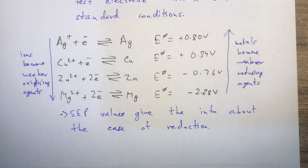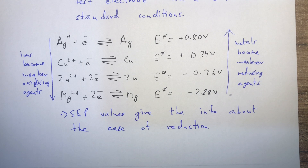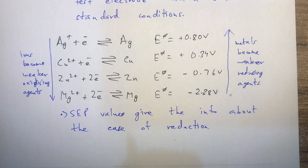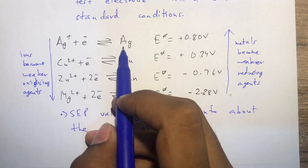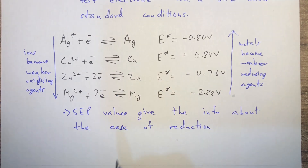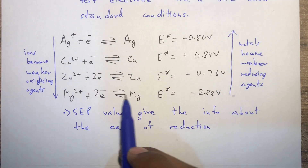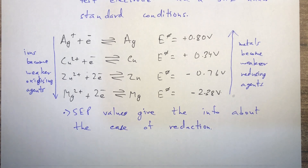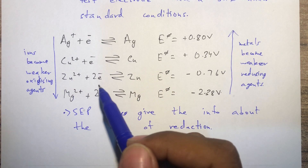To review quickly: if the SCP value is more positive, the substance gets reduced easily and is a strong oxidizing agent. If the SCP value is more negative, the substance is difficult to reduce and is a weak oxidizing agent. Looking at the backward reaction: if the SCP value is more positive, the metal is difficult to oxidize and is a weak reducing agent, whereas magnesium - with a more negative SCP - is easier to oxidize and is a strong reducing agent.